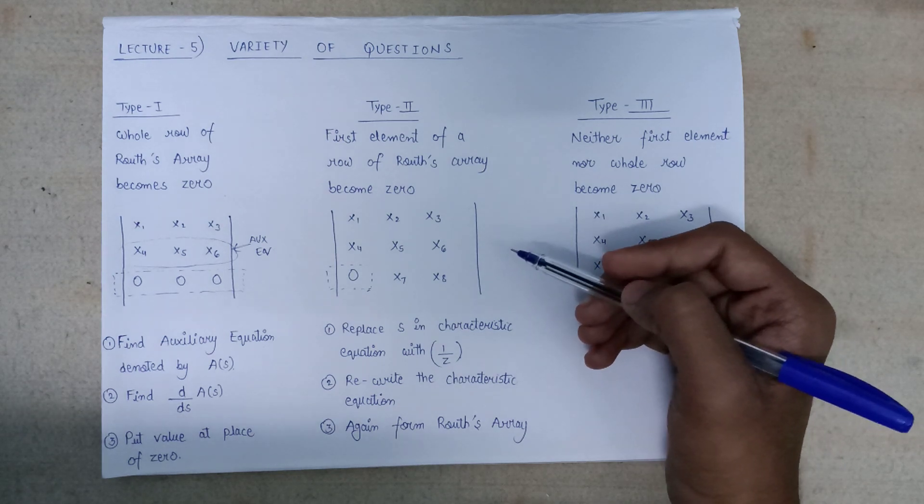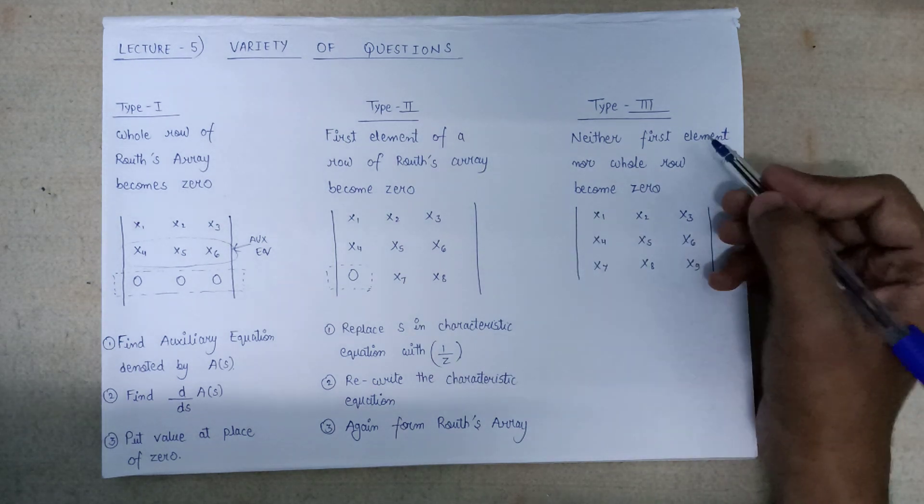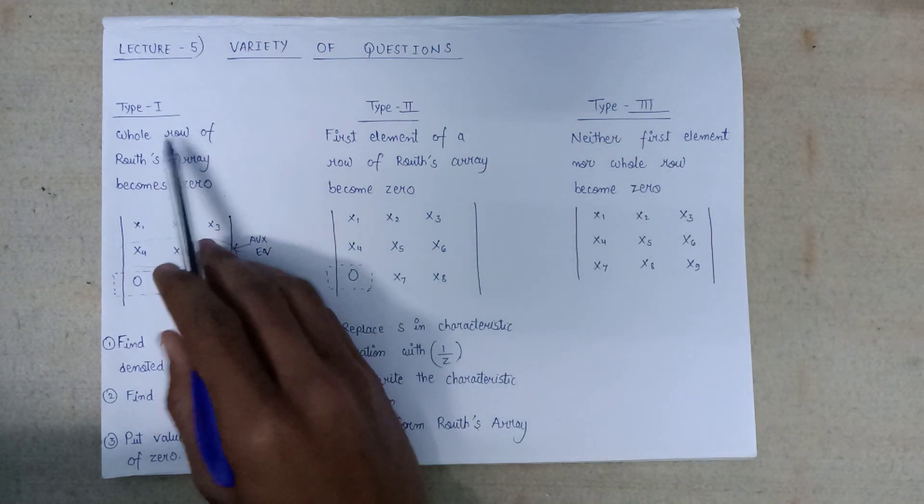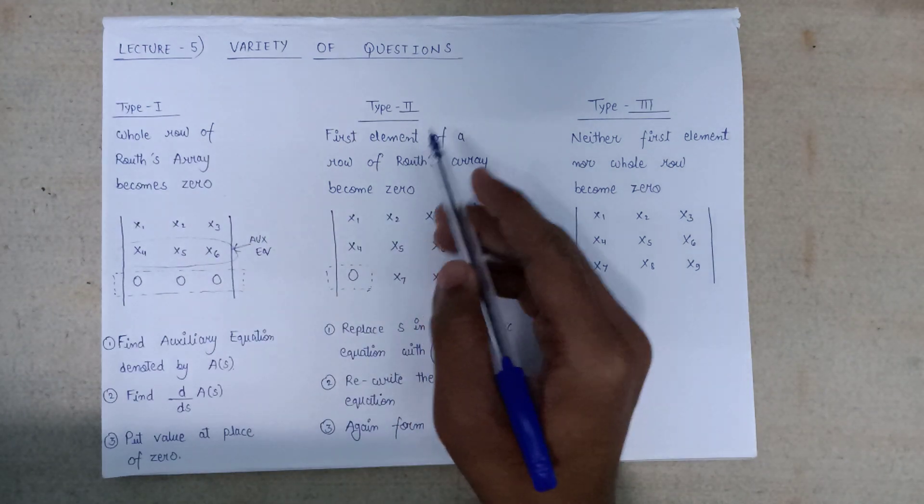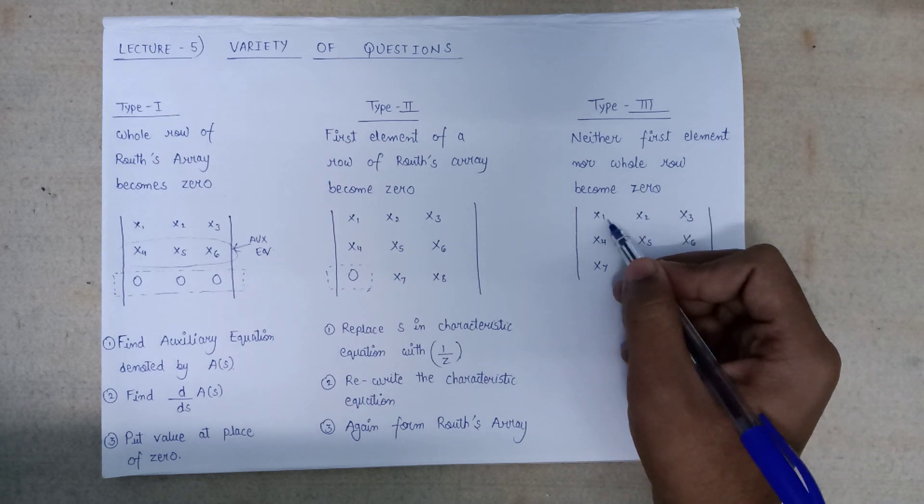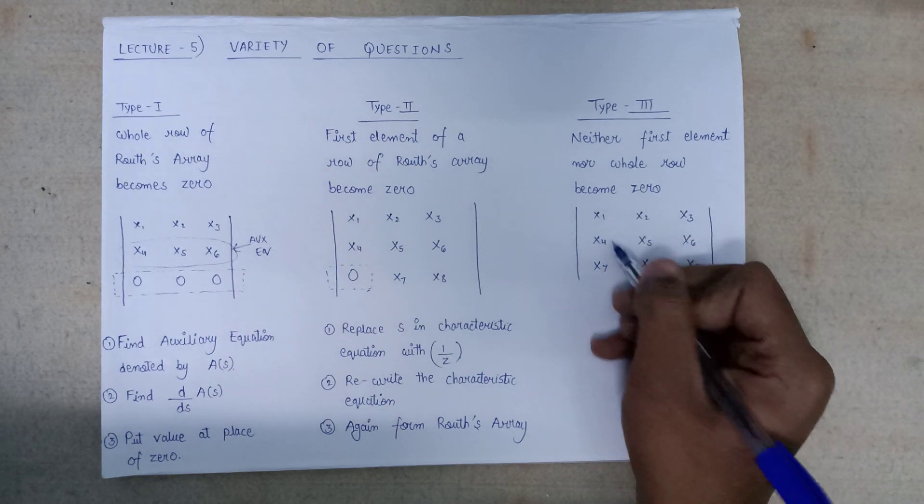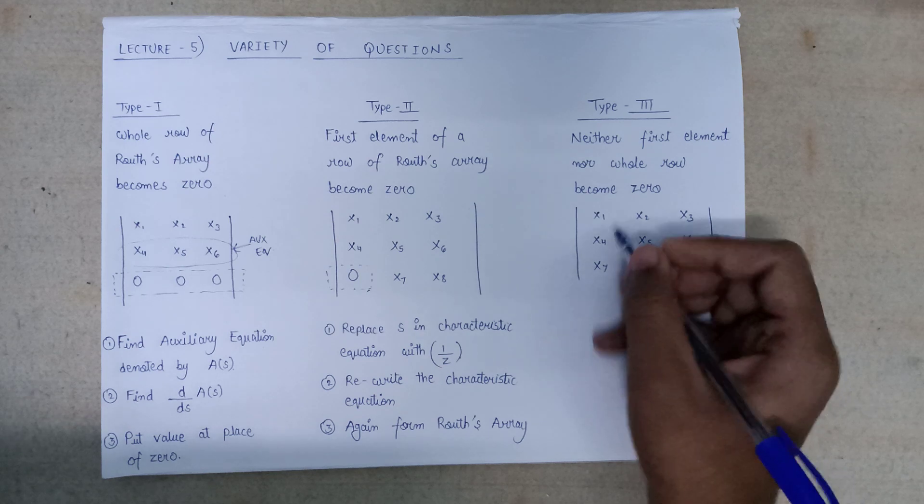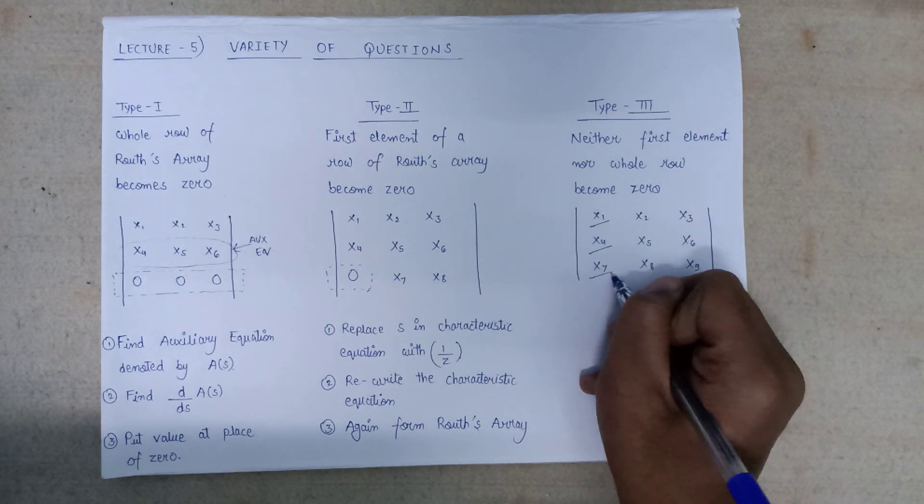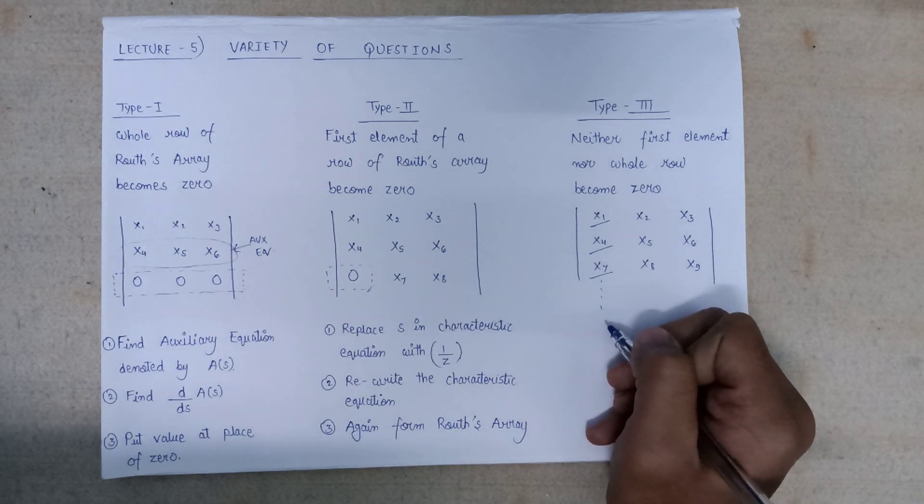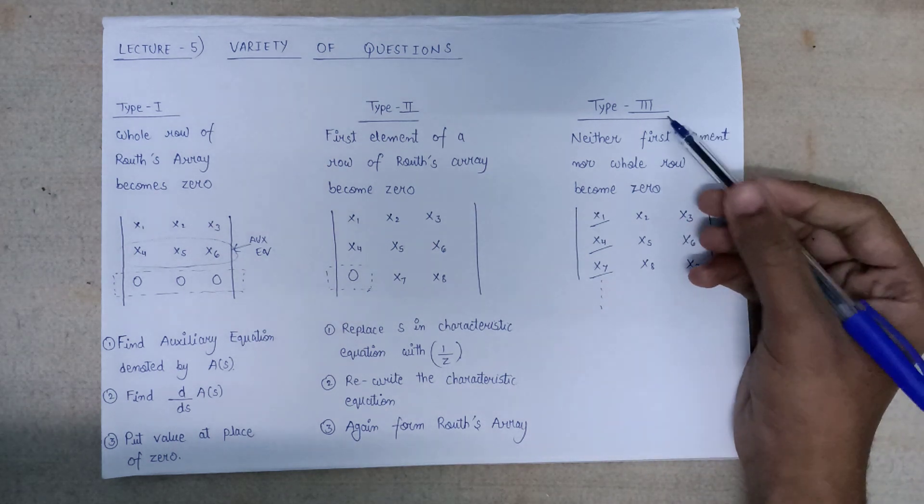Let's move on to Type 3 questions. In Type 3 questions, neither the first element nor the whole row becomes zero. This is neither a Type 1 nor Type 2 question. All elements of Type 3 questions are non-zero. At least the first element of each and every row of the Routh array will be non-zero—that is, x1, x4, x7, and so on will be non-zero elements. This type of question comes under the Type 3 category.